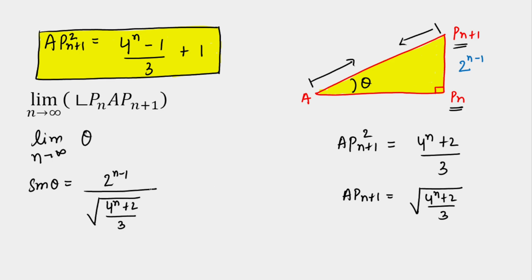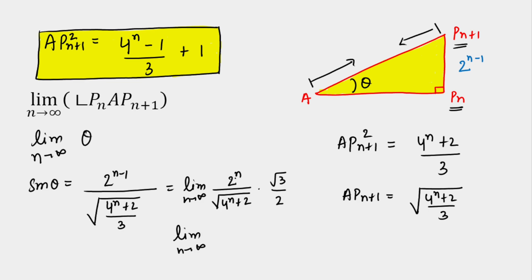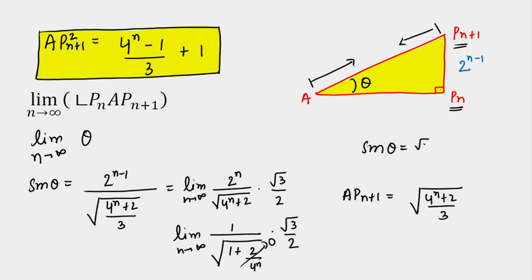Taking the limit as n → ∞: sin(theta) = (2^n / √(4^n + 2)) × (√3 / 2). Dividing numerator and denominator by 2^n, the term (2/4^n) tends to 0, so we get sin(theta) = √3/2. Therefore theta = π/3 as n tends to infinity, and π/3 is our final answer.